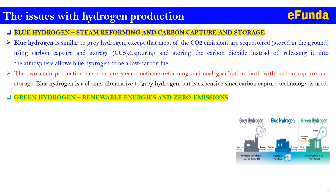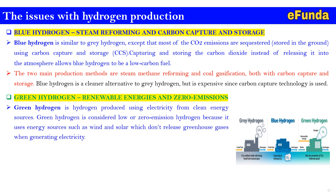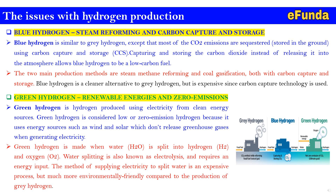Green hydrogen — renewable energies and zero emission: green hydrogen is produced using electricity from clean energy sources such as wind and solar, which don't release greenhouse gases when generating electricity. Green hydrogen is considered low or zero emission. It is made when water (H2O) is split into hydrogen (H2) and oxygen (O2) through a process called electrolysis, which requires an energy input. Supplying electricity to split water is an expensive process but much more environmentally friendly compared to the production of gray hydrogen.